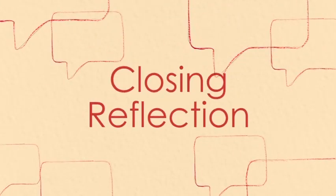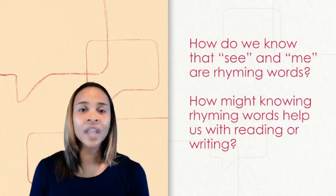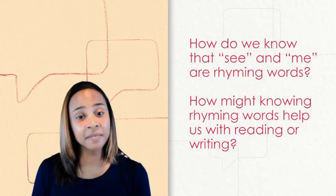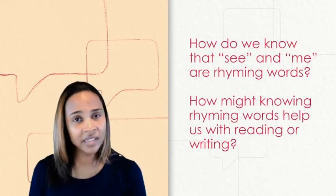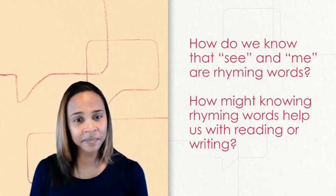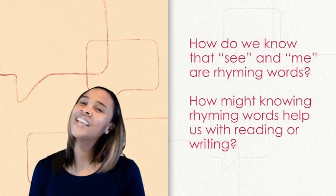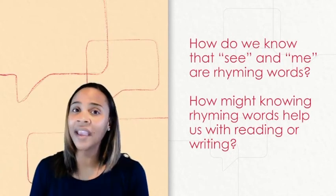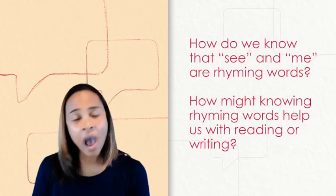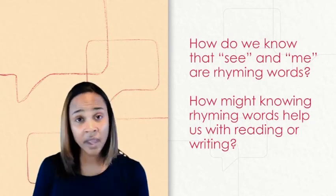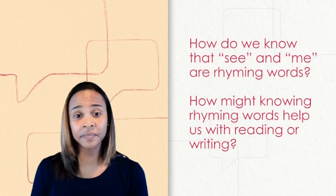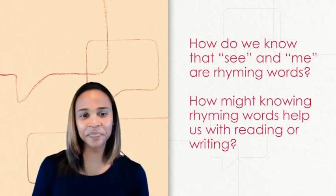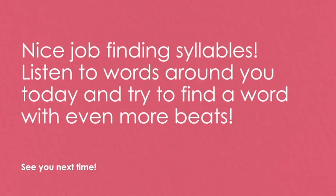Closing reflection. How do we know that see and me are rhyming words? Yes. Because words that rhyme have the same ending sound. And how might that help us with reading and writing? Nice job.